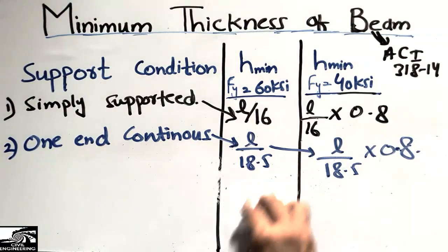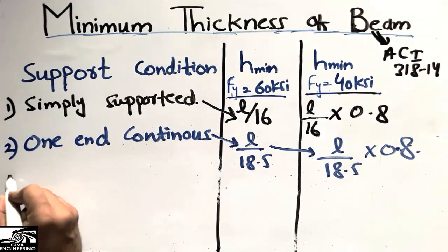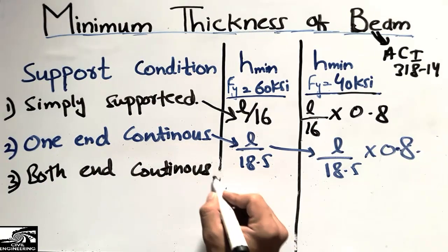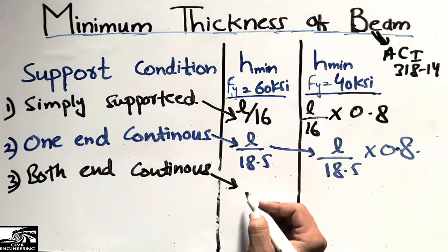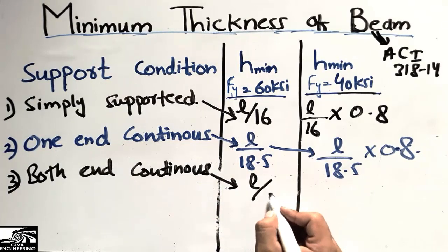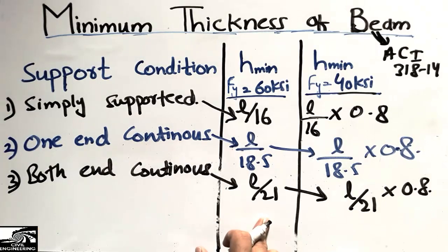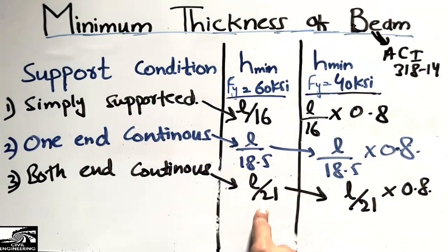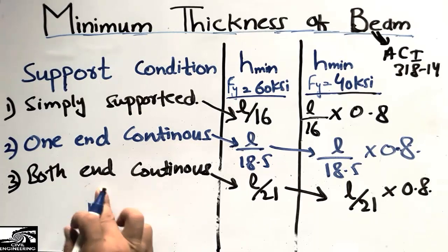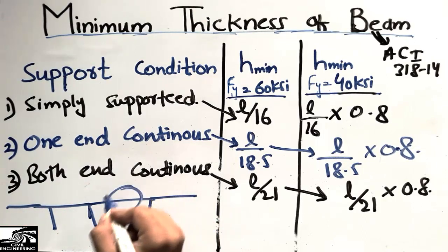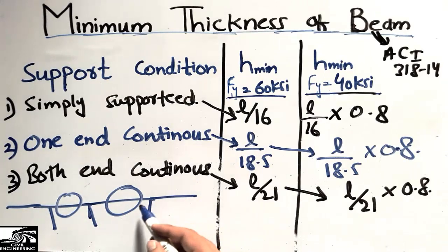The third type is the both-ends continuous beam, where the beam is continuous on both sides. The minimum depth or thickness for this beam type is L/21 for Grade 60, and L/21 × 0.8 for Grade 40. This beam is supported continuously at both ends, so it benefits from greater structural restraint, allowing a shallower minimum depth.